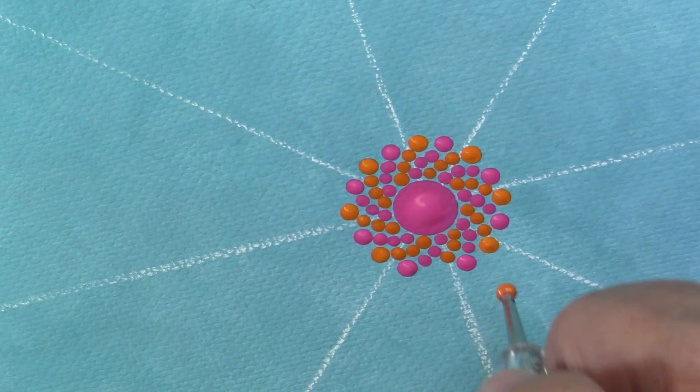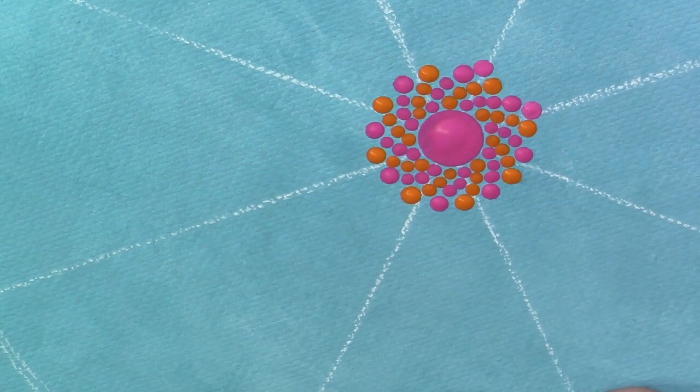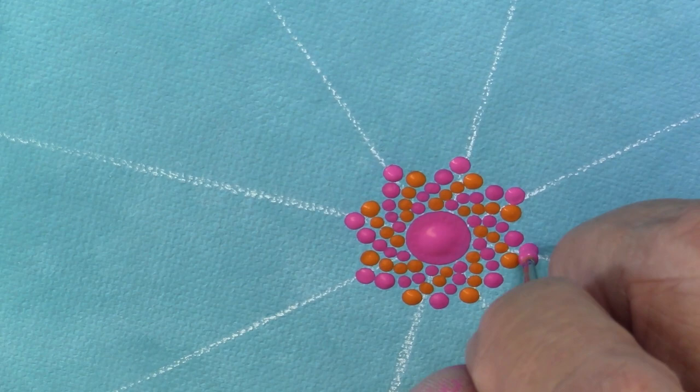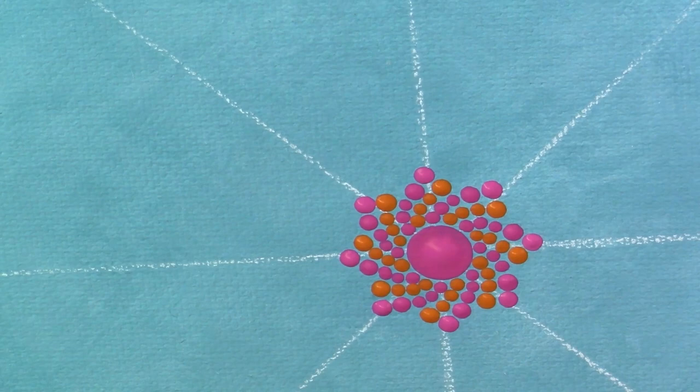So I will keep building on this pattern. You can start to see the spiral slightly. It's still not as apparent as it will be in the next few rows. But we'll just keep dotting. If you make a mistake, don't forget, you can just go back with a Q-tip and wipe it out.